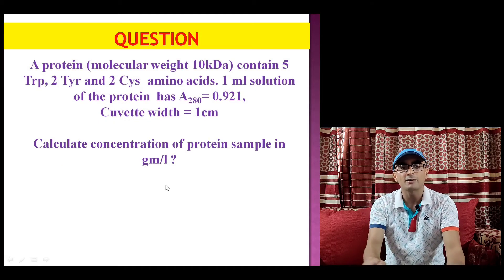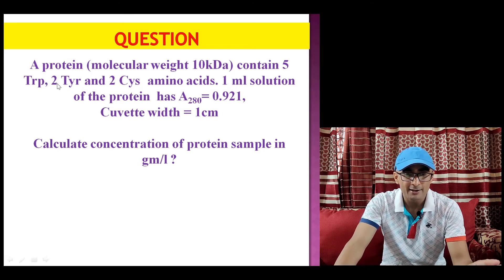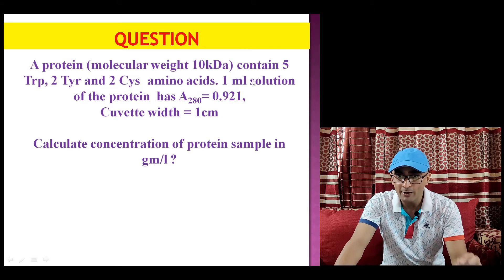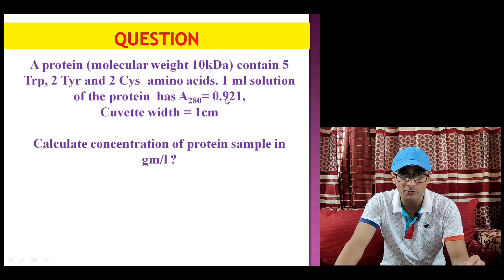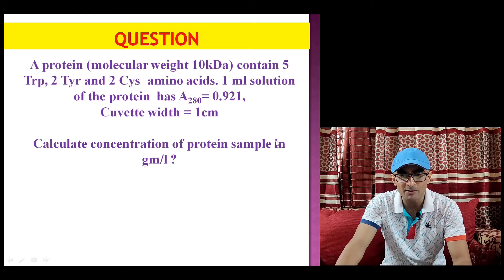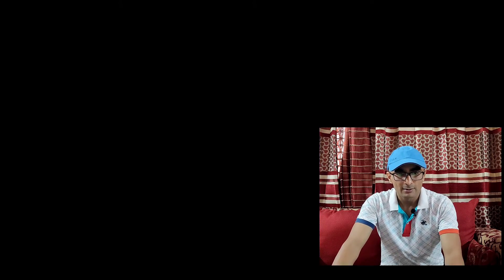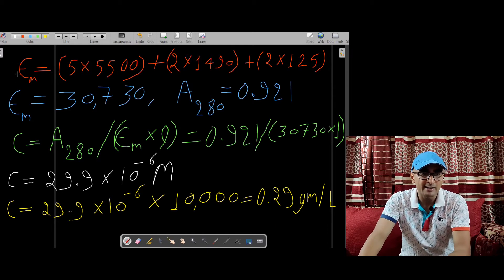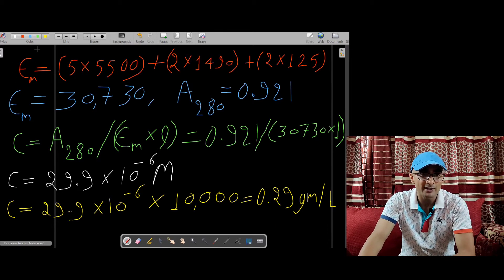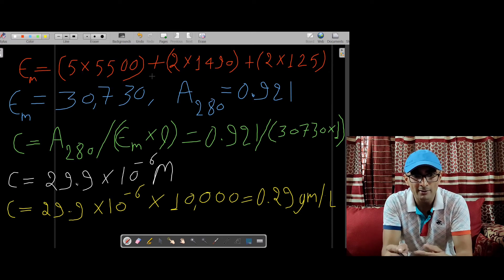Now let's take a numerical question. We have a protein of 10 kilodalton molecular weight, and this protein contains 5 tryptophan, 2 tyrosine, and 2 cysteine amino acids. One ml of this protein solution gives an absorbance at 280 nanometer equal to 0.921. The path length — the width of the cuvette — is 1 centimeter, and we need to calculate the concentration of the protein sample in gram per ml. Before using Beer-Lambert's law, we need to calculate the molar extinction coefficient of the protein using the amino acid composition formula.